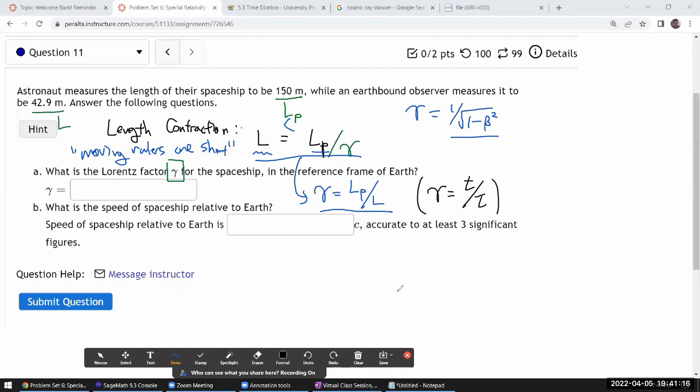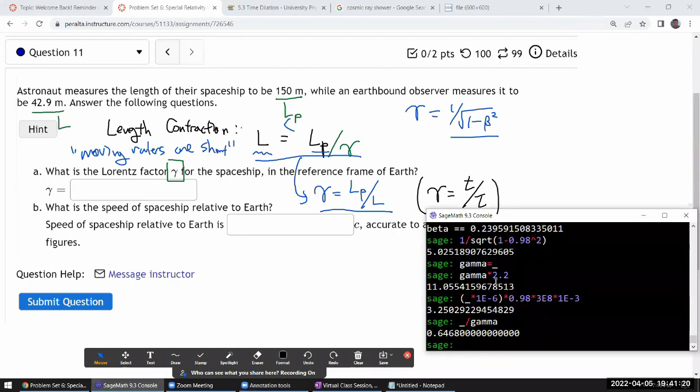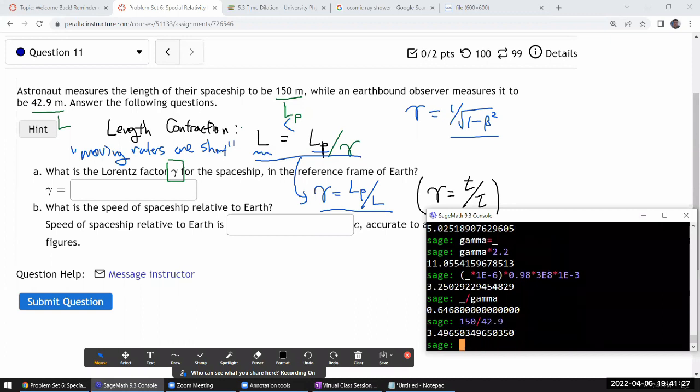So I don't think I can do this in my head, so let me just write it down. My gamma should be 150, the proper length divided by the contracted length.